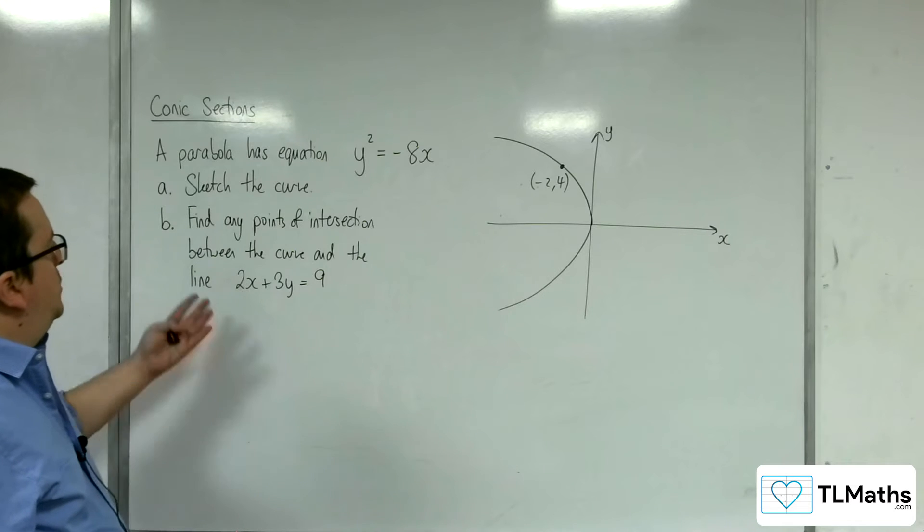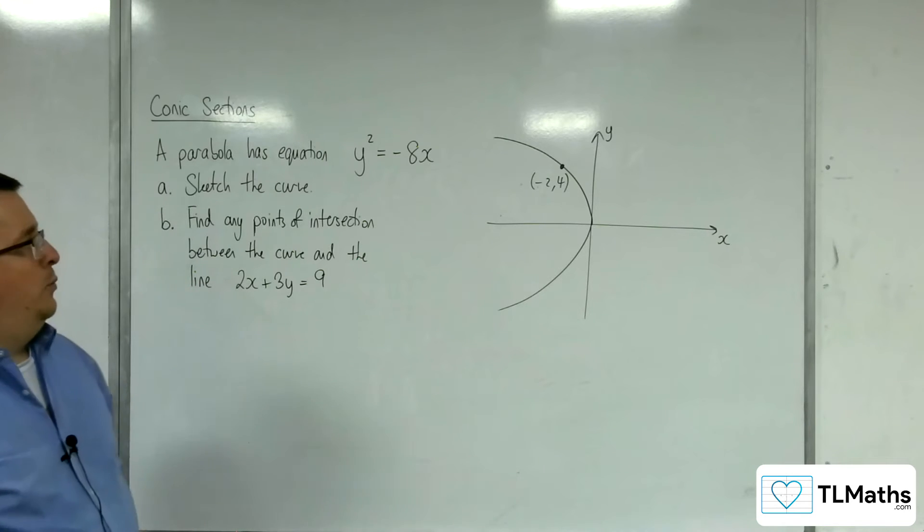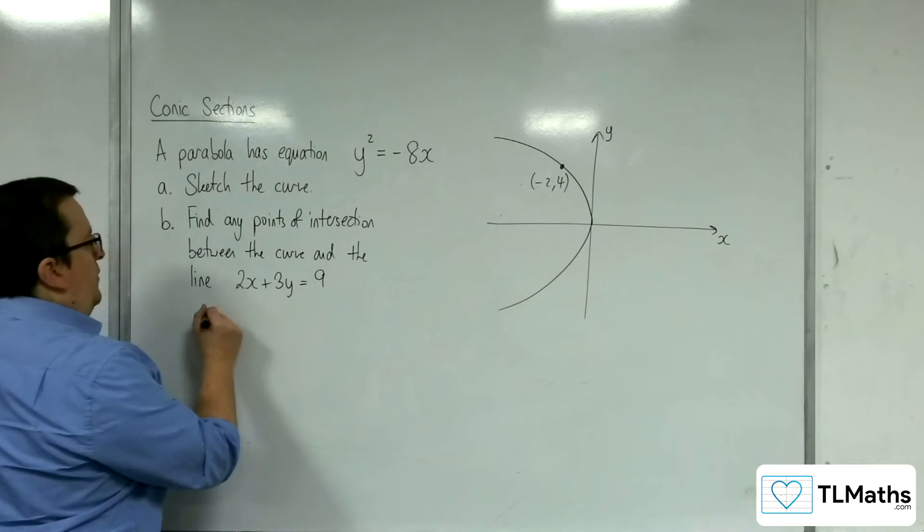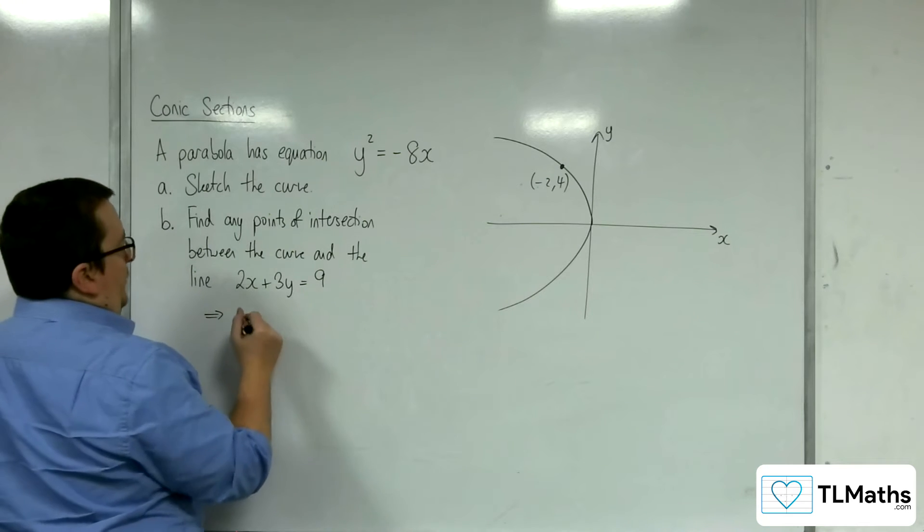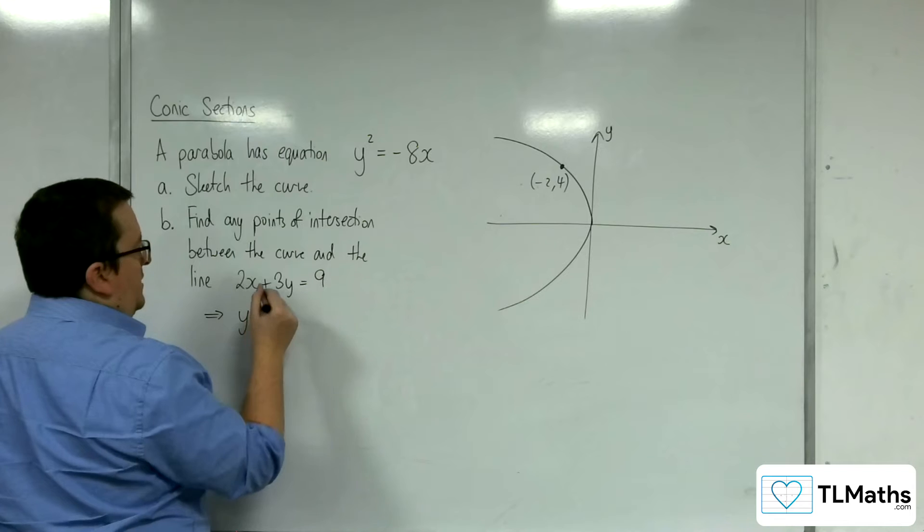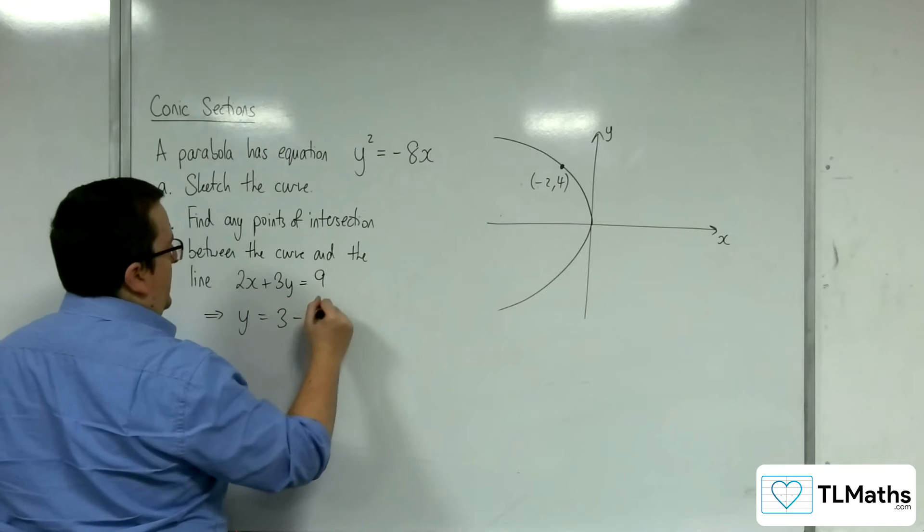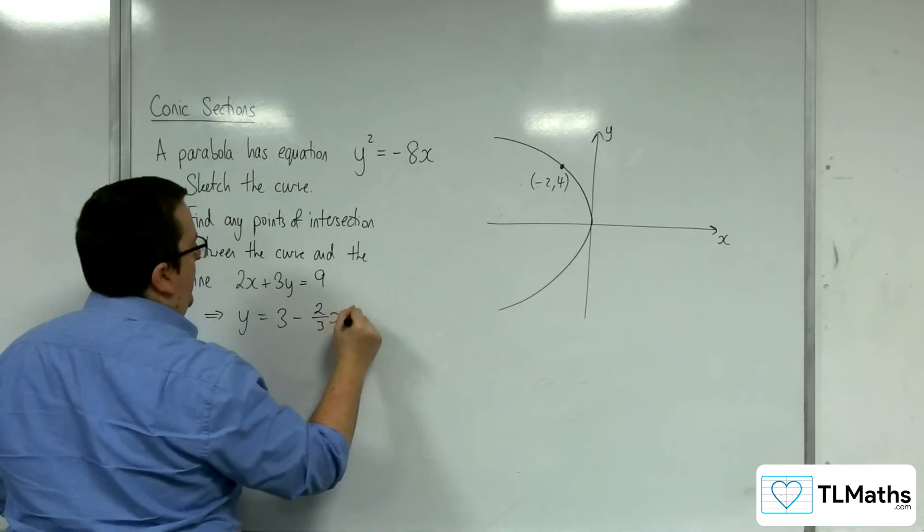Find any points of intersection between the curve and the line 2x plus 3y equals 9. So the first thing I would do is rearrange this to get y equals. So y is equal to 9 take away 2x, then divide it by 3. So 3 take away 2 thirds x.